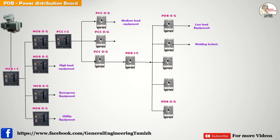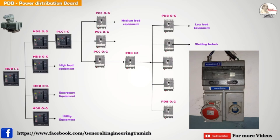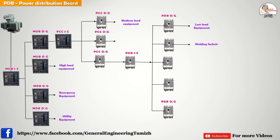Next, there is a welding circuit. Across the plant you can see this type of circuit — it's for portable tool connections like grinding machines, welding machines, and cleaning machines. That supply is connected from the PDB. Also, three-phase AC systems — such as split ACs and packaged ACs used in industry — are supplied from the PDB. Additionally, three-phase ventilation systems like large exhaust fans, air handling units, and air coolers are also supplied from the PDB.